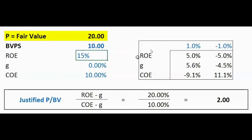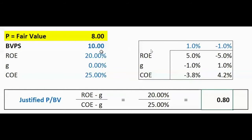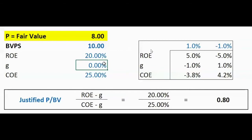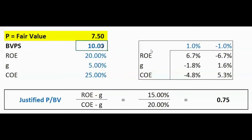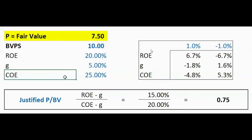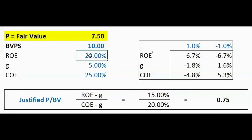Now let's consider a scenario where the cost of equity is 25% and the ROE is only 20%. Here you should not even pay the full book value — you should pay less, say 80% of book value. And if there's also growth in this bank, you should pay even less — only 75% of book value. That's because the bank is growing while generating a return below the required rate of return, effectively burning cash. A bank should not grow at all if its ROE is lower than its cost of equity, because that growth destroys value.